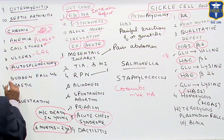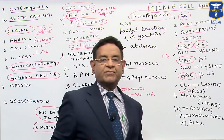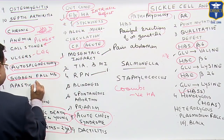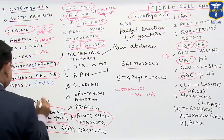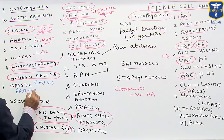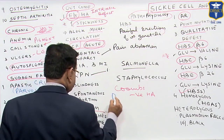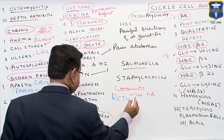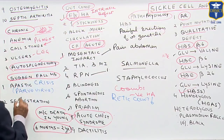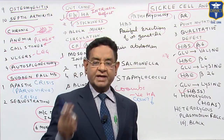There are conditions where a sudden fall in hemoglobin occurs. One is aplastic crisis, very common after parvovirus infection, where the reticulocyte count is reduced. The other is sequestration crisis, where the reticulocyte count is normal or increased.